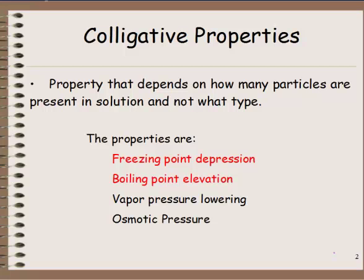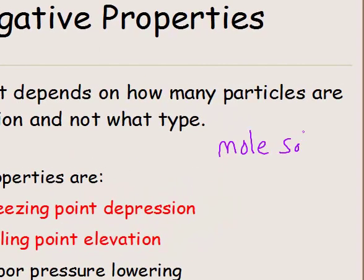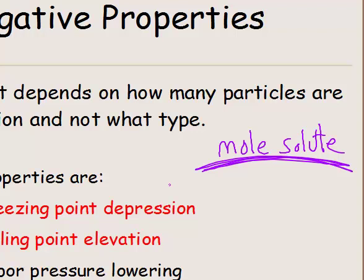Colligative properties are properties that depend on how many particles are present in solution and not what type. That can be a bit confusing, but I'll explain it as we go. Really what you're just trying to find is how many moles of solute particles. That's really the key number that you're looking for, moles of solute particles.